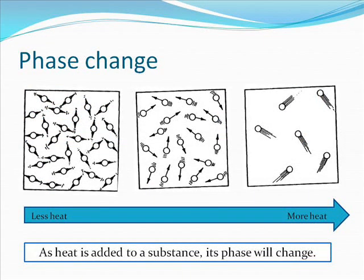A phase change takes place when the substance changes state of matter — in other words, it changes from a solid to a liquid, or a gas to a solid, or any combination of these. As heat is added to a substance, its phase will change. Notice that the more heat a substance has, the further apart and the faster its molecules are moving.